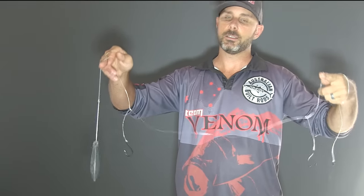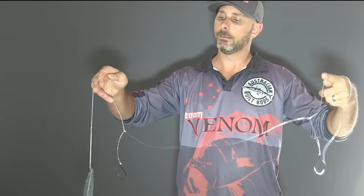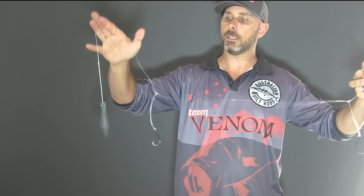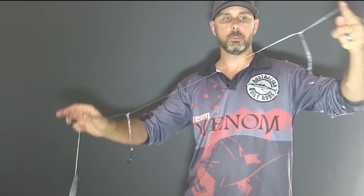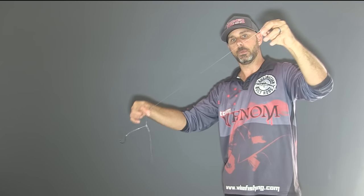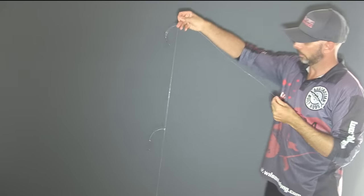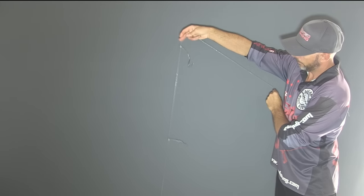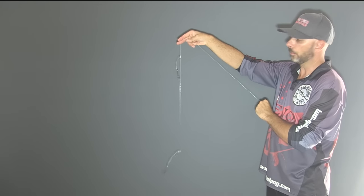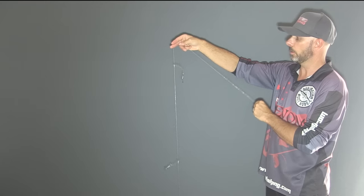Okay so there's our finished double dropper loop Paternoster rig. As you can see equal distance between our sinker and our first dropper loop, second dropper loop all the way through to our swivel that we attach to our main line. As you can see very simple yet effective rig for any of the bottom feeding fish you might be chasing.